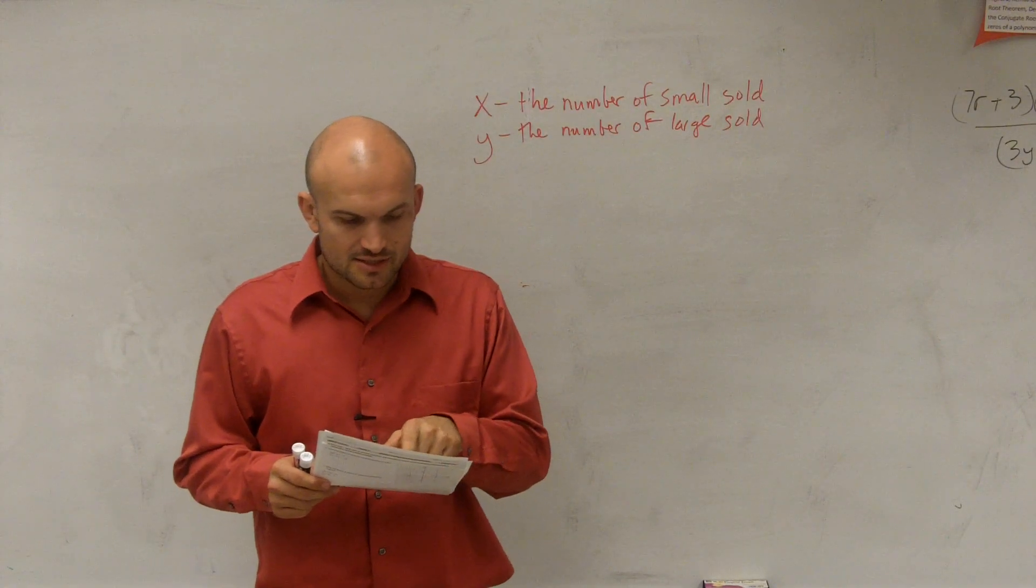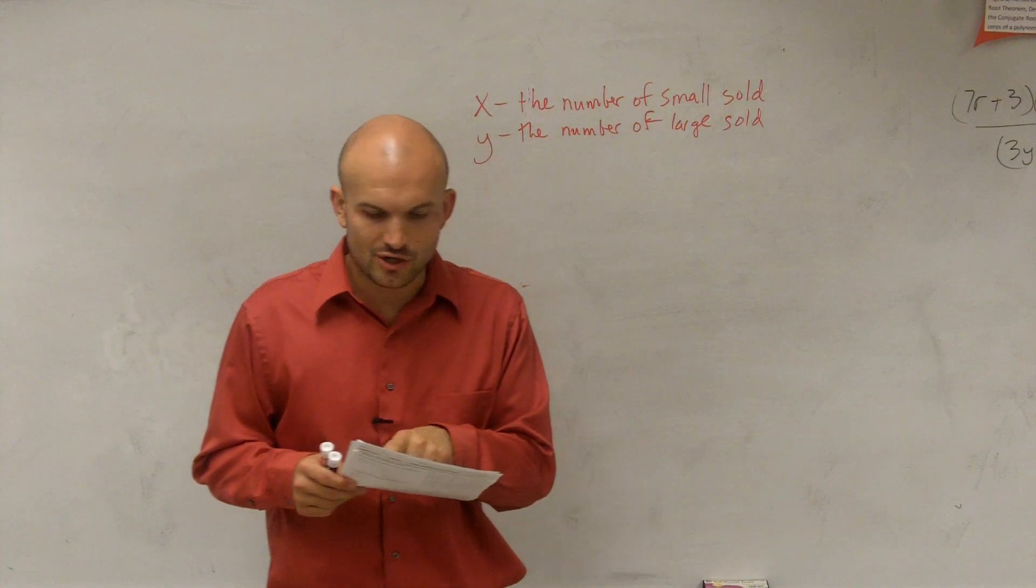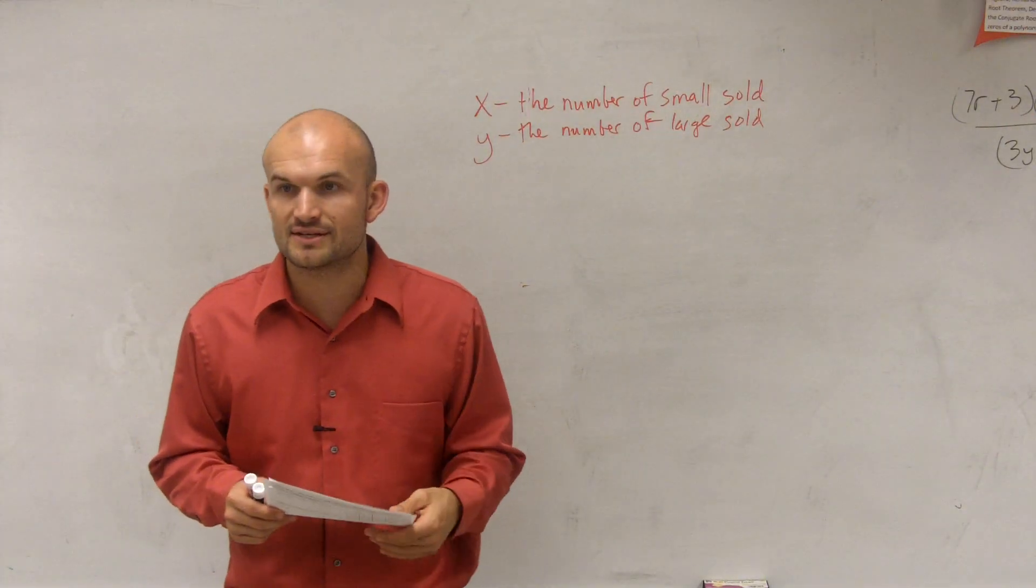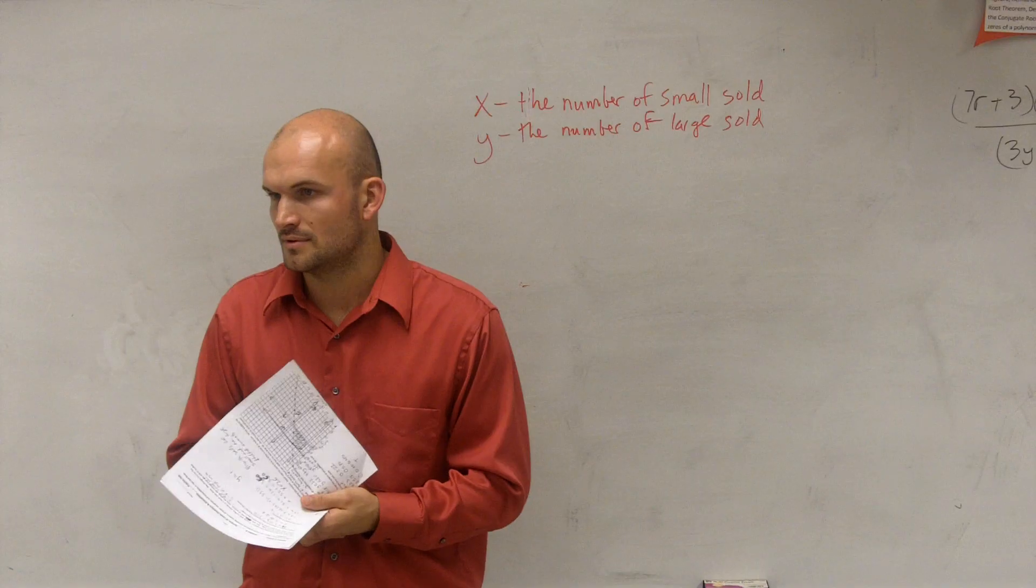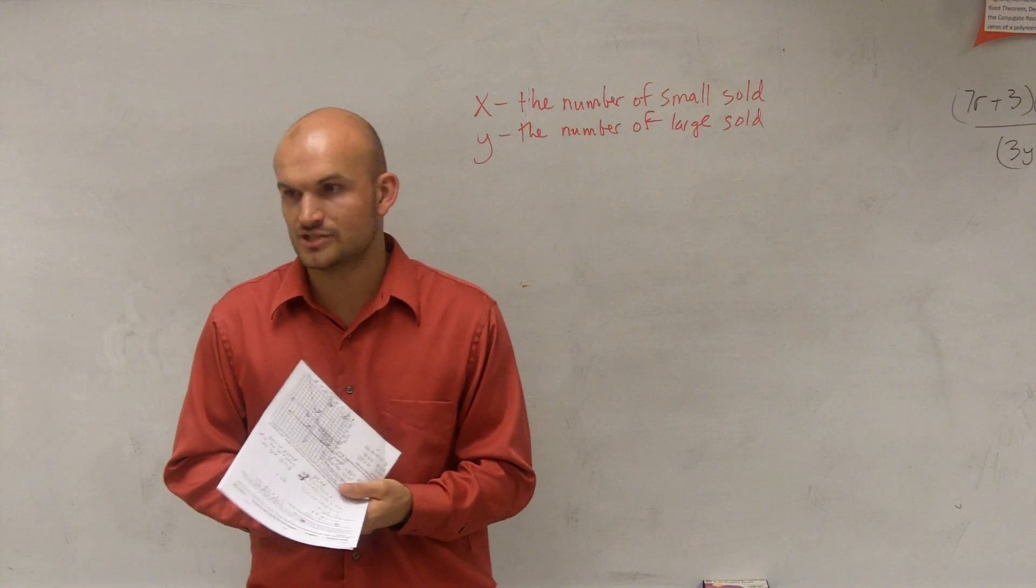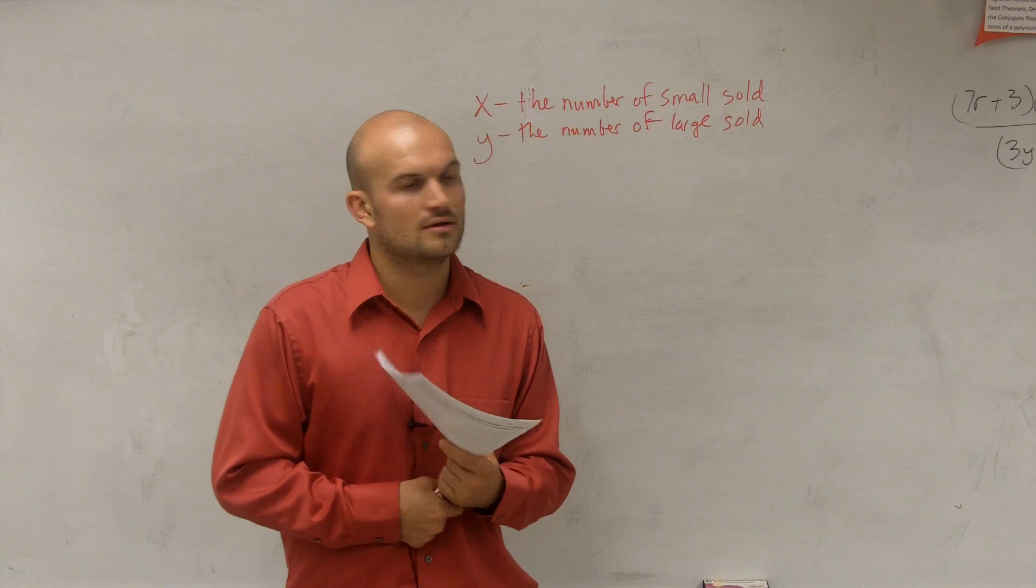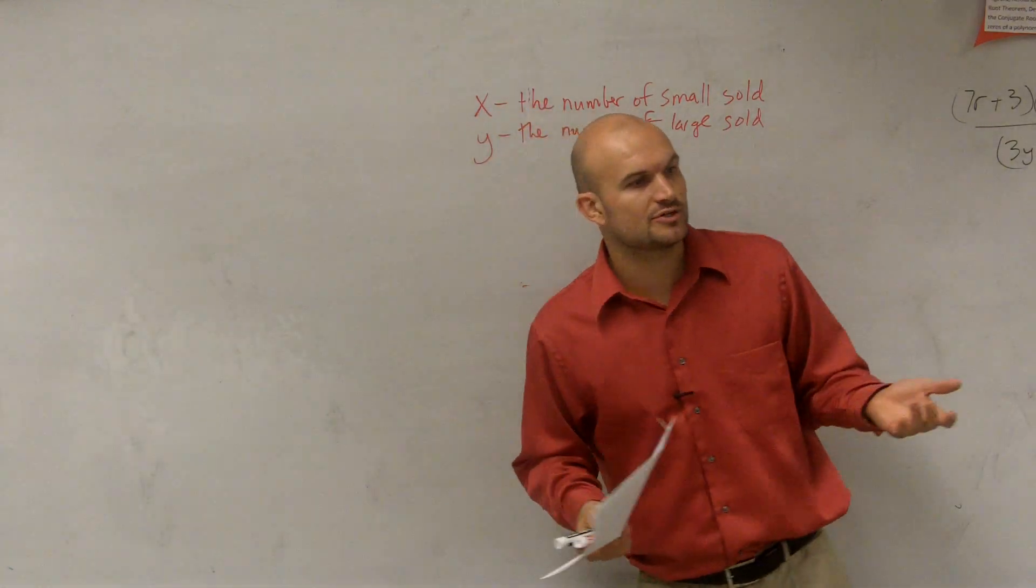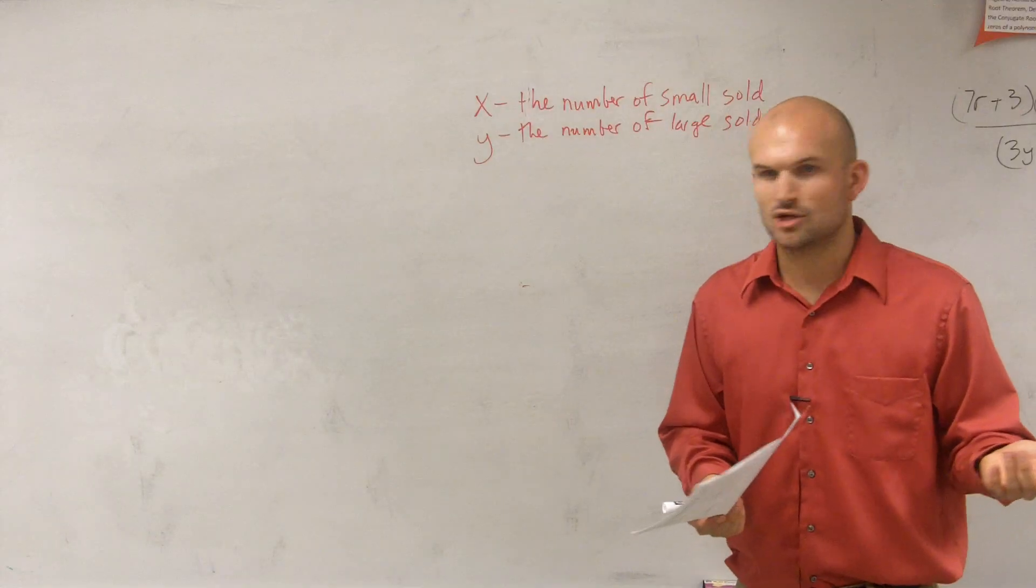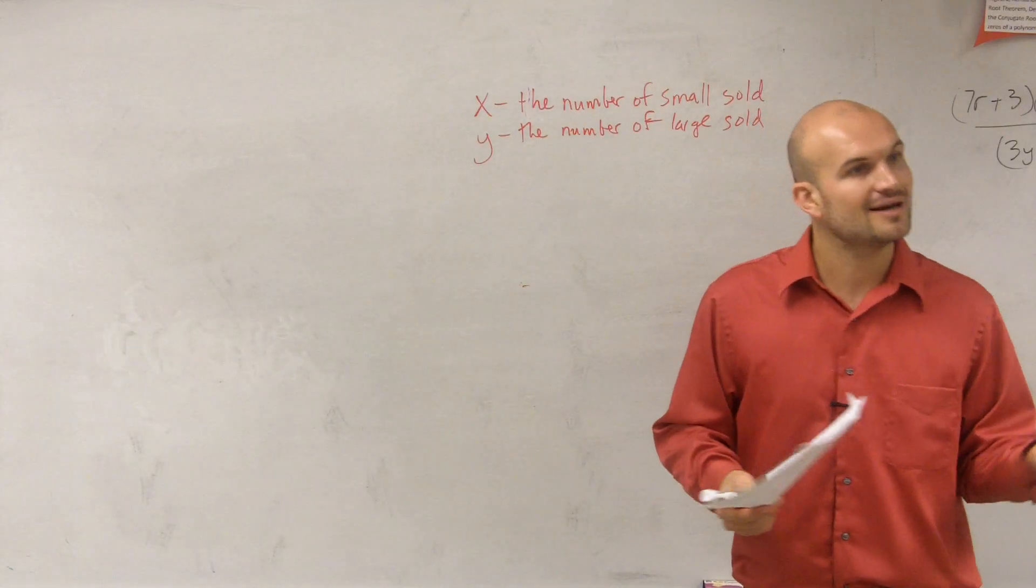So I'm going to kind of work backwards. So it said, after the show, she noticed that she sold 27 stuffed animals. So the total number sold is what? 27. The total, notice I said that. Total means you're going to do what? The opposite is equal. You're going to, well, okay. But yeah, it's what it's going to equal, but what operation would you think of adds a total? Multiplication, subtraction, addition, right?